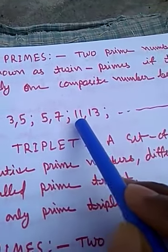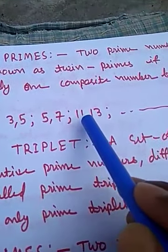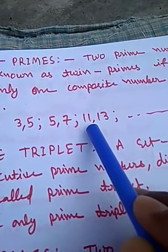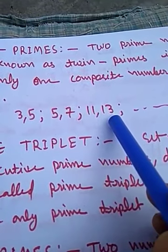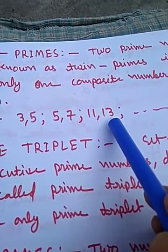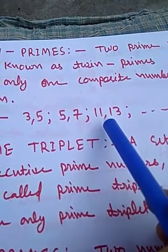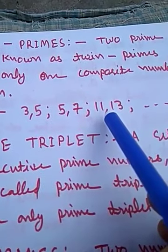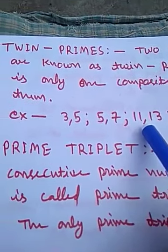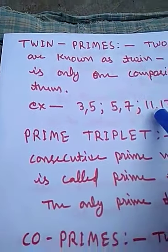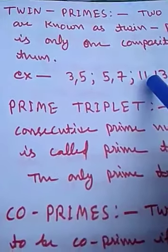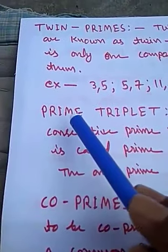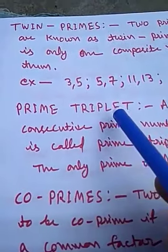The third example is 11 and 13. Here 11 is a prime number and 13 is also a prime number. There is only one composite number between them, which is 12. Now the second concept is the prime triplet.